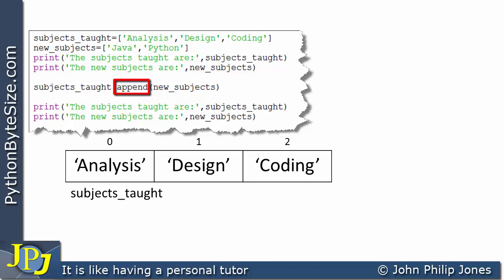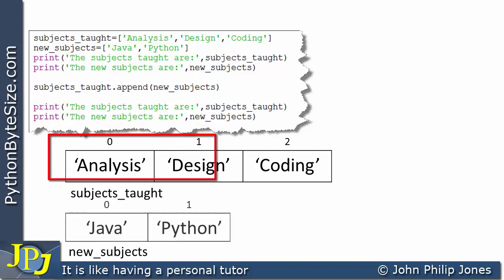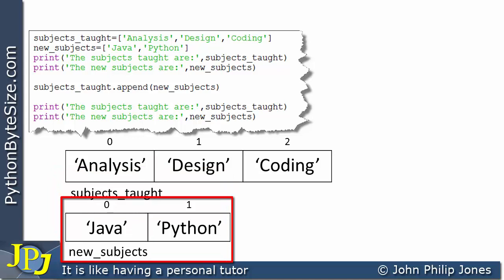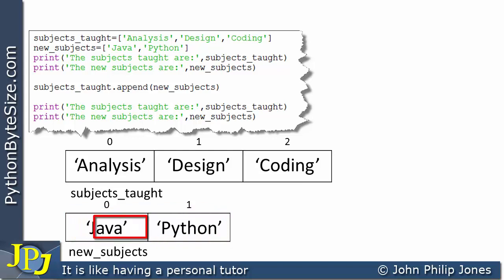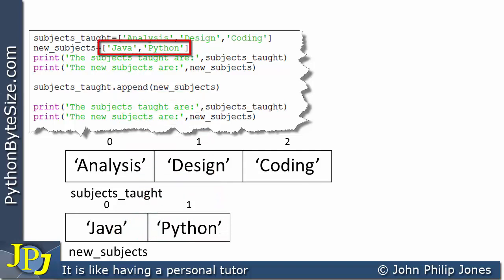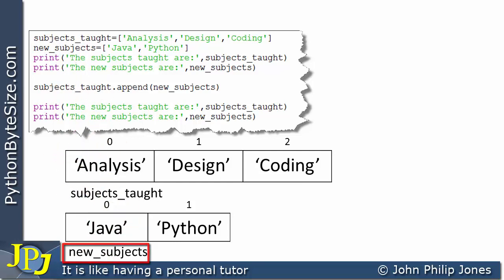Now I'd like to go on to look at this program statement, which is going to create another list. Schematically, this list is again an instance of the list class, and if you look at the indices they go from zero to one — two elements. This one stores the string 'Java' and this one stores the string 'Python', as you can see in the code. The name bound to this instance is new_subjects.